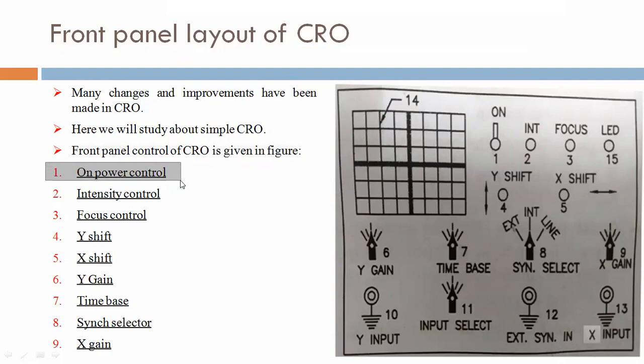First, on power control. Here we are saying first, in figure, this is called on power control. Second, intensity control. So here this point, in figure, this is intensity control. Third, focus control. In figure, we are saying this is the third point. Fourth, Y-Shift. Fifth, X-Shift.